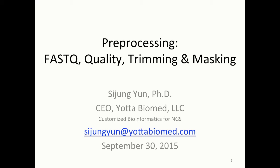For this lecture, I'm going to talk about preprocessing — what I mean by preprocessing is before the alignment. I'm going to introduce the FASTQ file, which we get from the sequencer, and I'm going to talk about quality, and when we have some bad quality reads, what to do. There are two major ways: trimming and masking, and I'm going to discuss those options with hands-on.